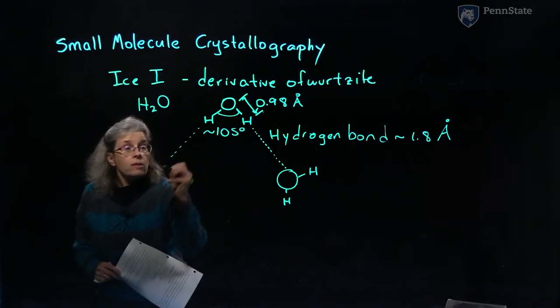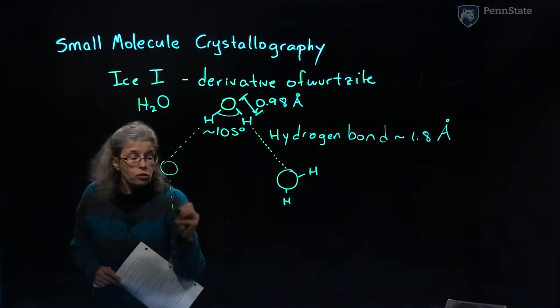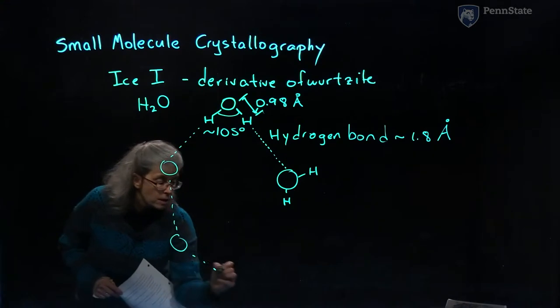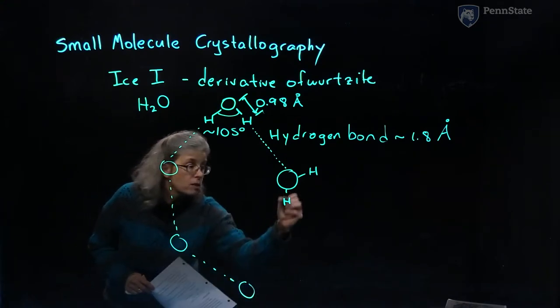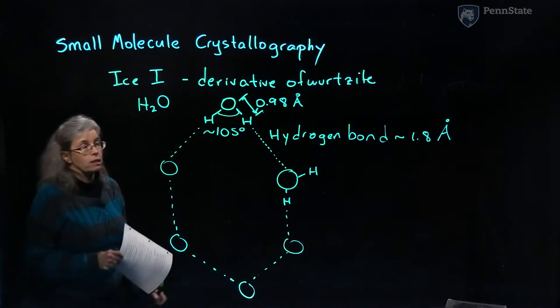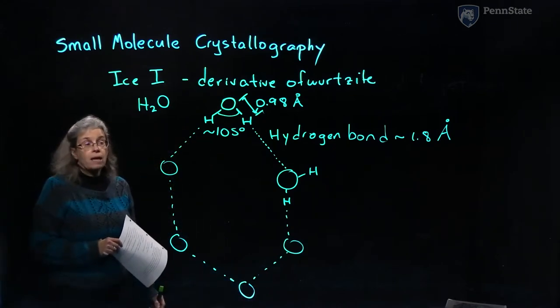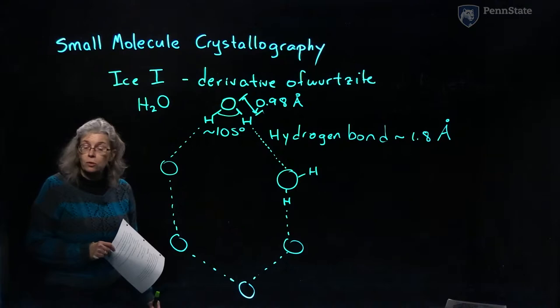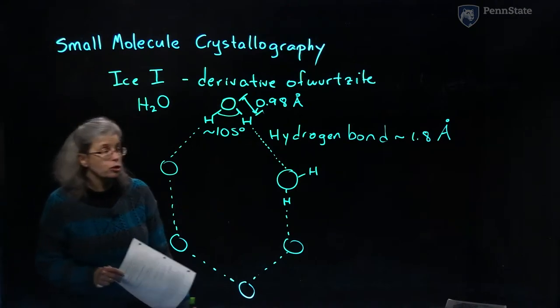The next thing to appreciate about this structure is that it will have a puckered hexagonal ring, as is characteristic of the Wurtzite structure, and the arrangement of hydrogens within that ring is partially random.